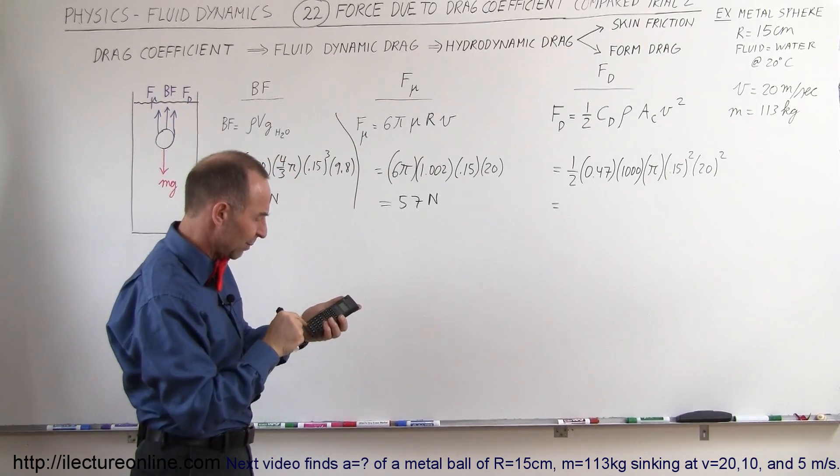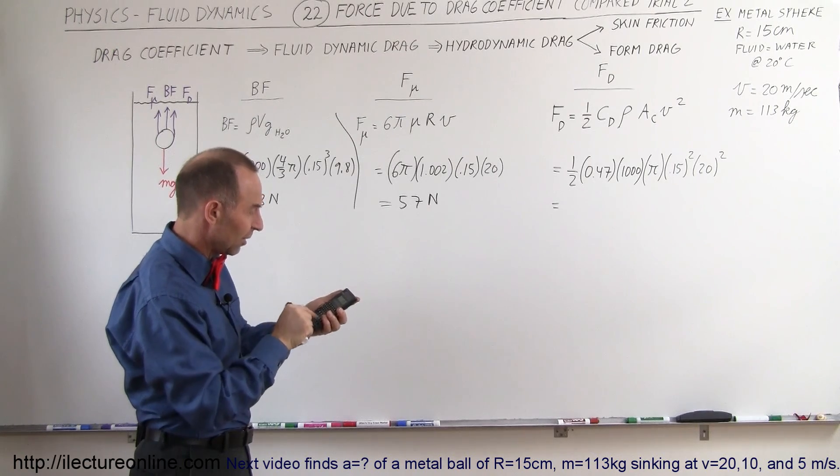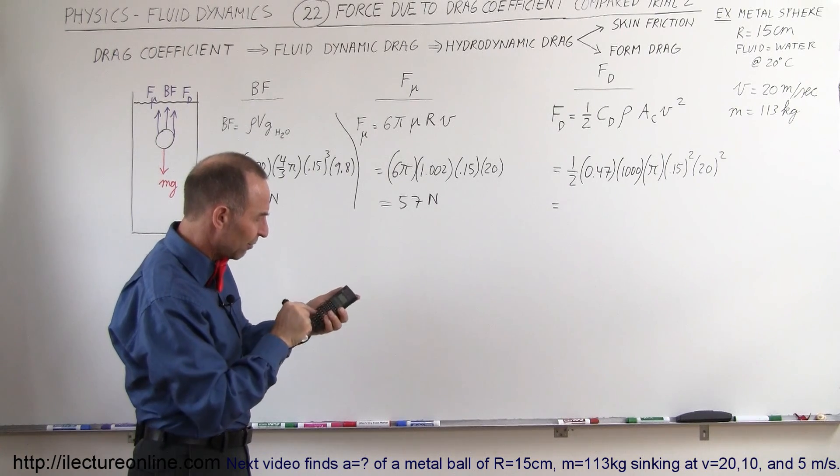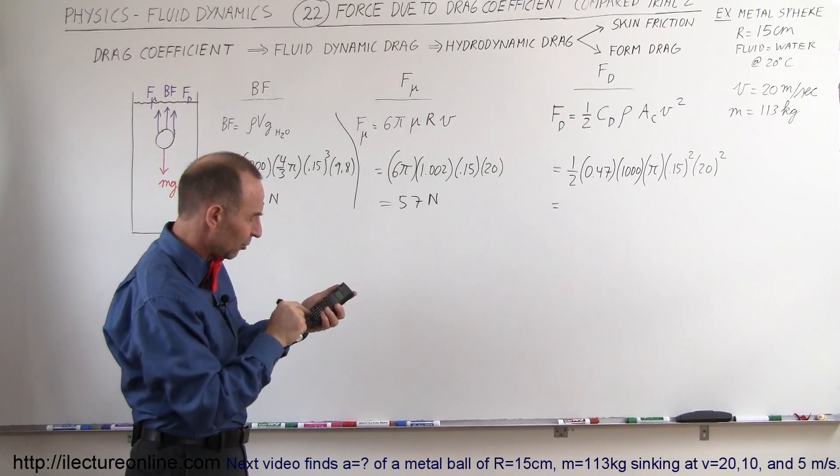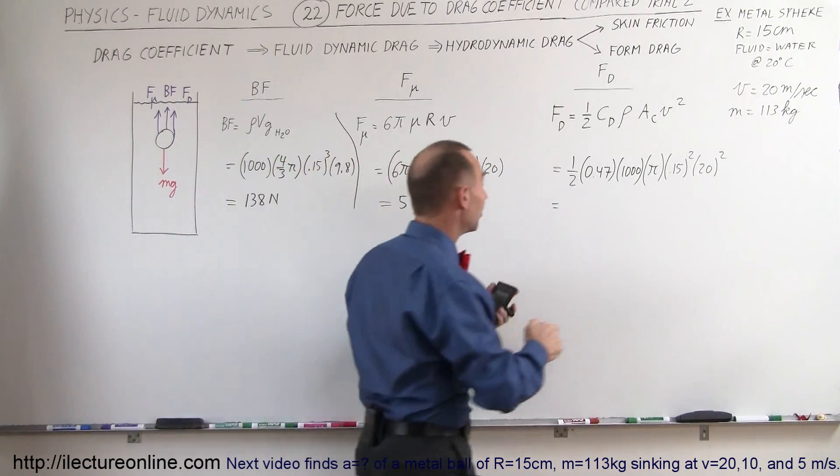So it would be 0.5 times 0.47 times 1000 times π times 0.15 squared times 20 squared, and that's 6644 Newtons.